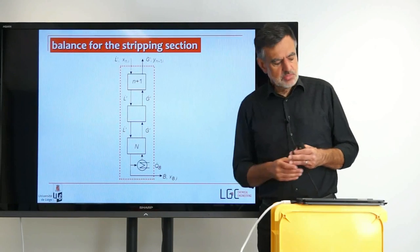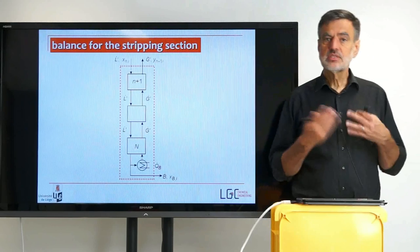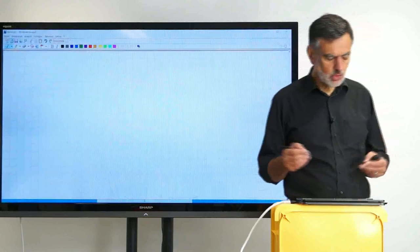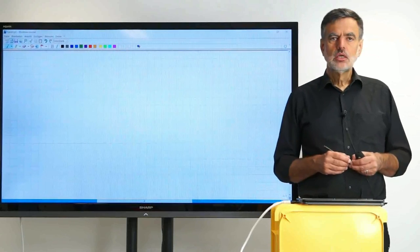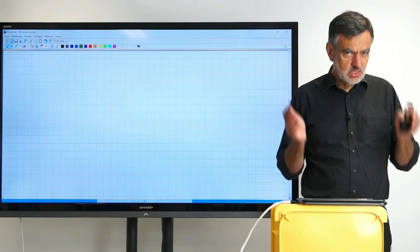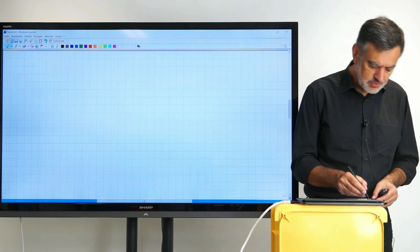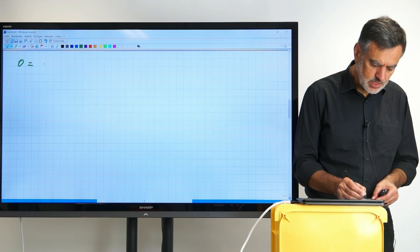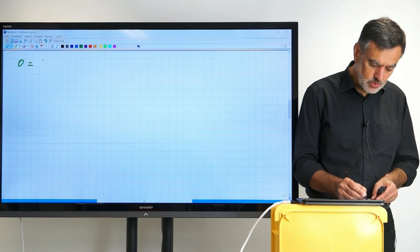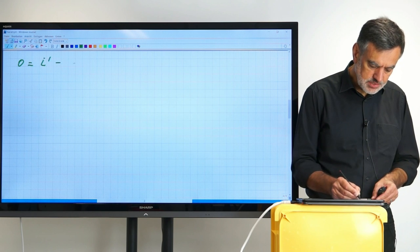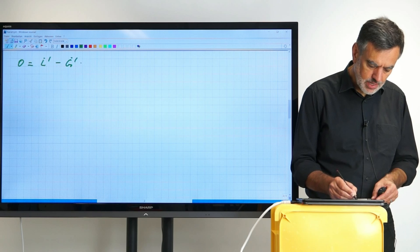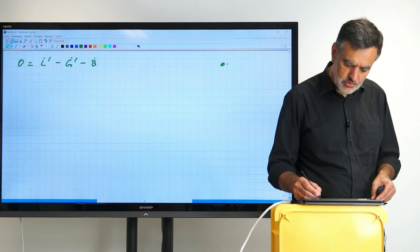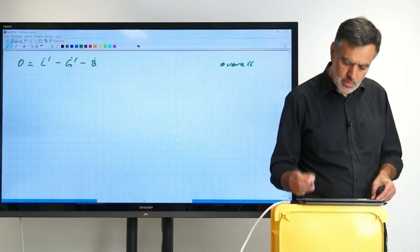Now let's set up the corresponding balance. For steady state, the left side of the equal sign is zero. So zero equals what is entering minus what is leaving. Entering was the L dot prime minus the G dot prime minus the B dot. And this is for the overall flow rates.